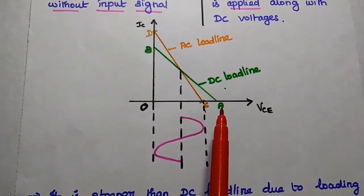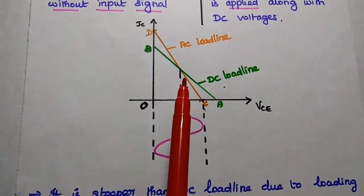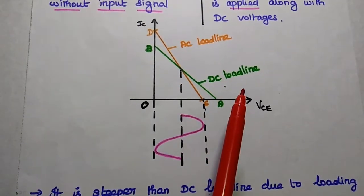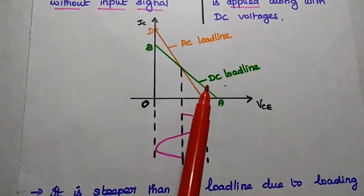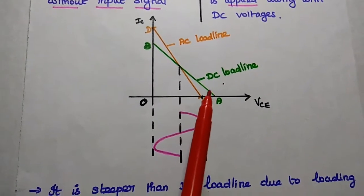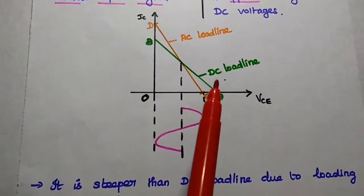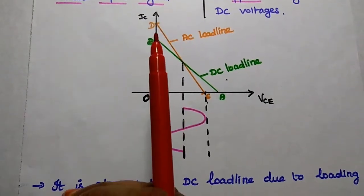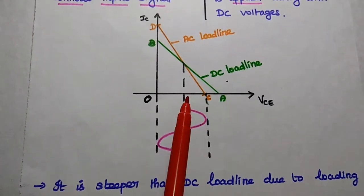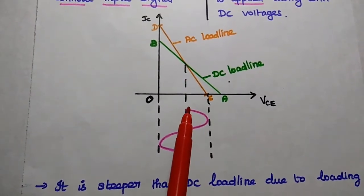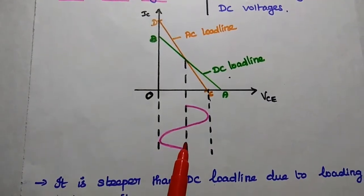From the diagram, we can see that the AC load line is steeper than the DC load line. This is due to the loading effect and capacitor effect because of the AC input signal. At the output side, we have to consider the loading and capacitive effect whenever the AC input signal is given, which gives a steeper slope for the AC load line. The AC load line is mainly used to represent the maximum swing of the output signal.